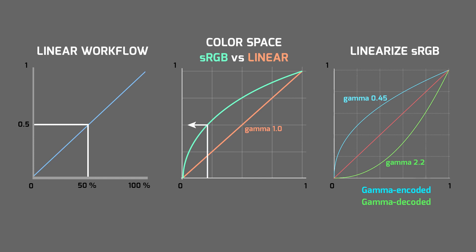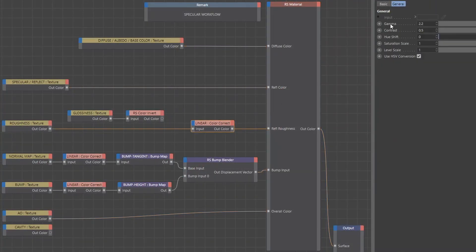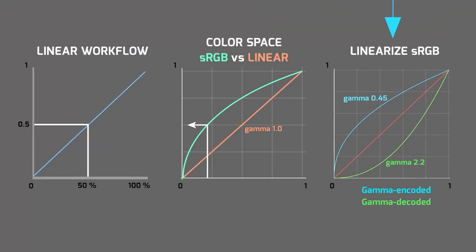In case that I don't want to use gamma override in the texture node, or this option is not available, another way to linearize gamma-encoded textures is to use gamma color correction 2.2. And as you can see on the third graph, the final result after this gamma correction is theoretically again a linear gamma curve with a value of 1.0.